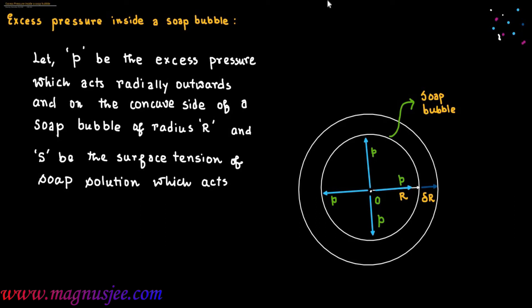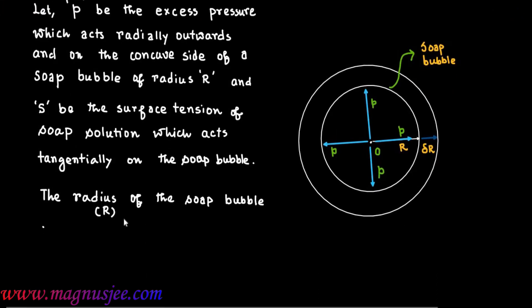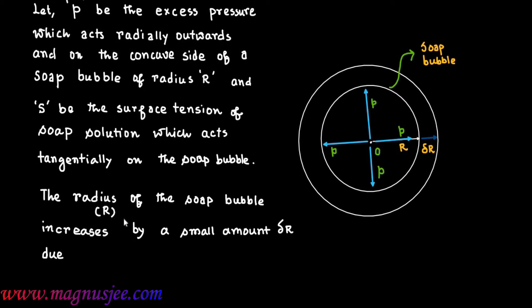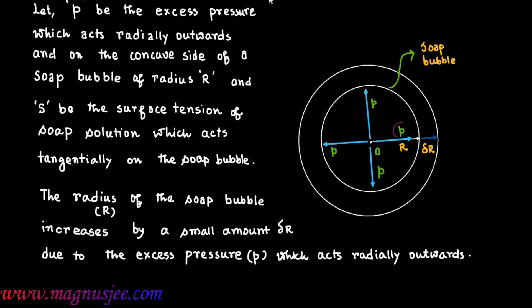Let p be the excess pressure acting radially outwards on the concave side of a soap bubble of radius r, and let s be the surface tension of the soap solution, which acts tangentially on the soap bubble. The radius r increases by a small amount delta r due to the excess pressure p.